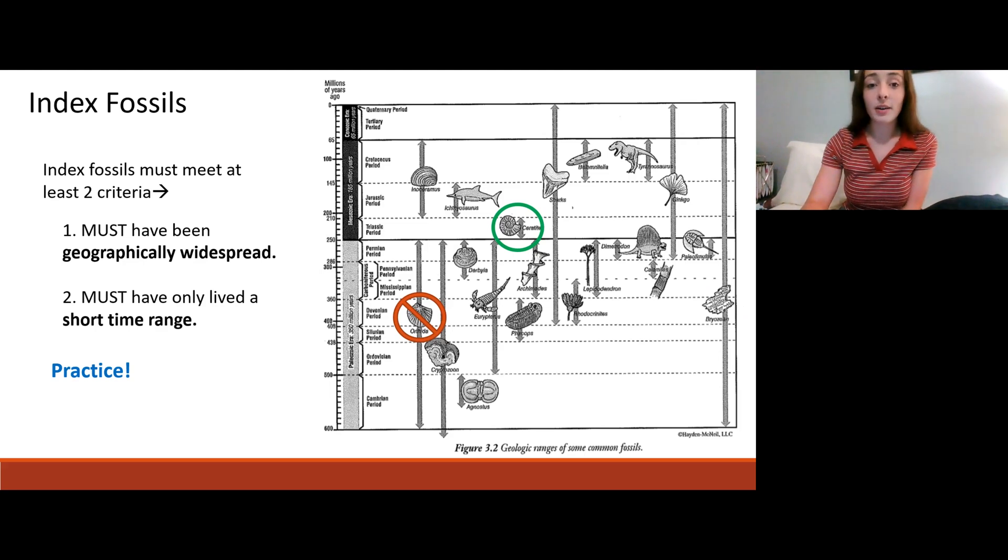The next fossil we're going to look at are bryozoans. Bryozoans have lived a long time, they're still around and have been around since the Cambrian time. The correct answer is no. Their time range is huge. Next we're going to look at bilimnites. The correct answer is yes. Their time range is relatively short, just the Cretaceous period, and so they would make a good index fossil especially if they were geographically widespread.